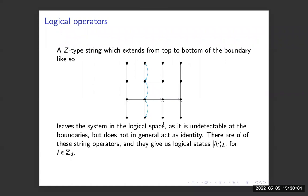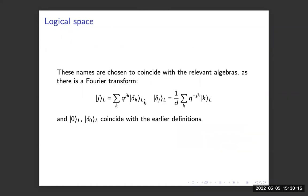Similarly, we can apply Z-type strings from top to bottom, and I'll call these logical states delta_I for each I in the group. Importantly, you can relate these states by the Fourier transform — you can check that if you sum the corresponding states in the lattice you get the right things out, so this is a Fourier transform of logical states. The implication is that the logical space is isomorphic to the vector space that the group algebra is supported on, so for CZ_D the logical space is D-dimensional.